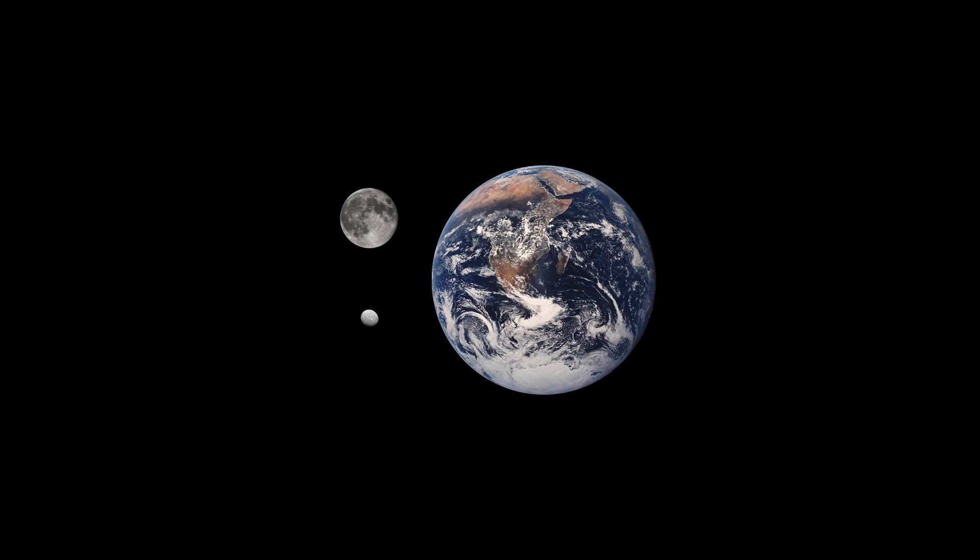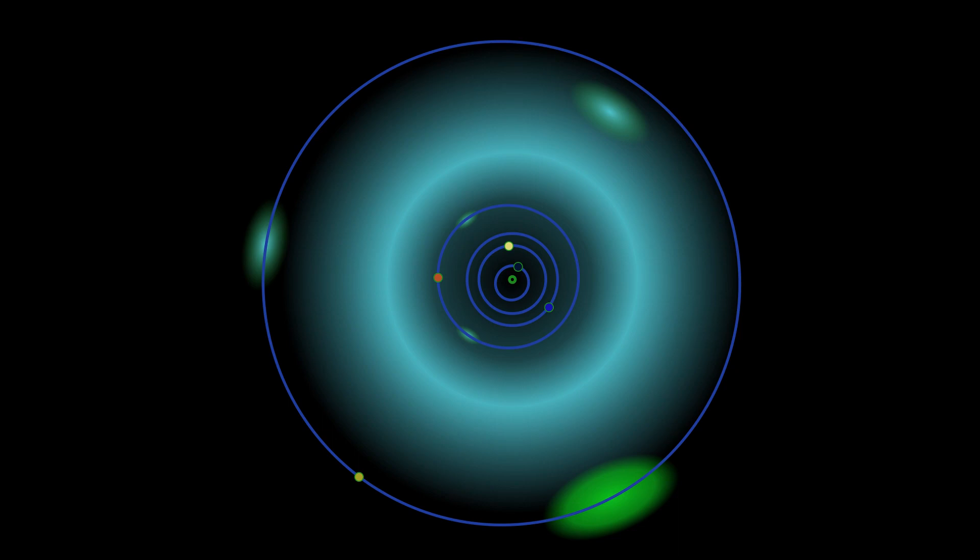Minor planets include asteroids, near-Earth objects, Mars crossers, main belt asteroids and Jupiter trojans, as well as distant minor planets, centaurs and trans-Neptunian objects, most of which reside in the Kuiper belt and the scattered disk.